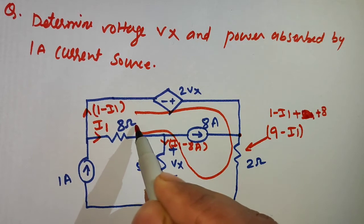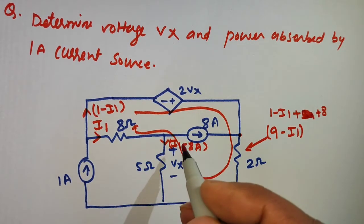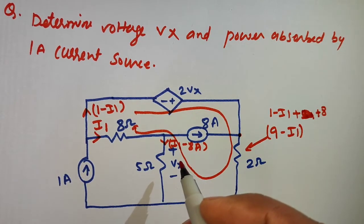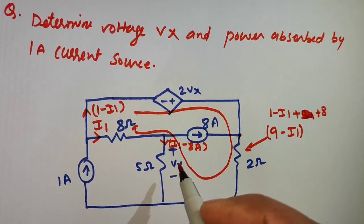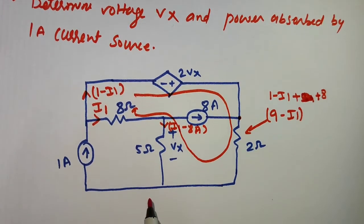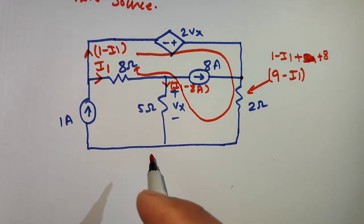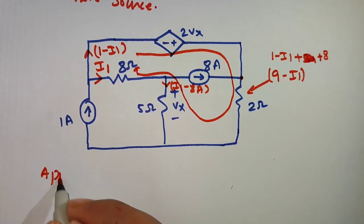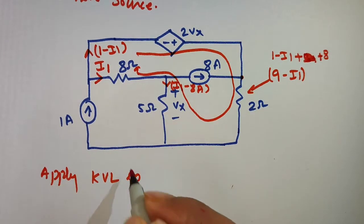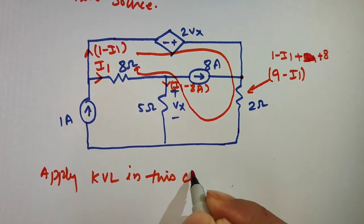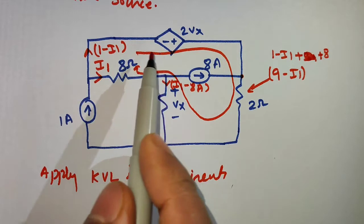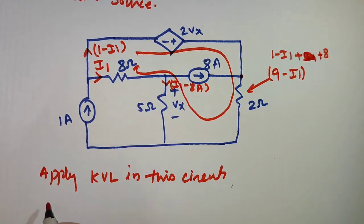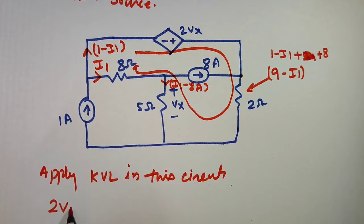So our current directions will be like this, this, and this. We will apply KVL in this loop to find Vx.